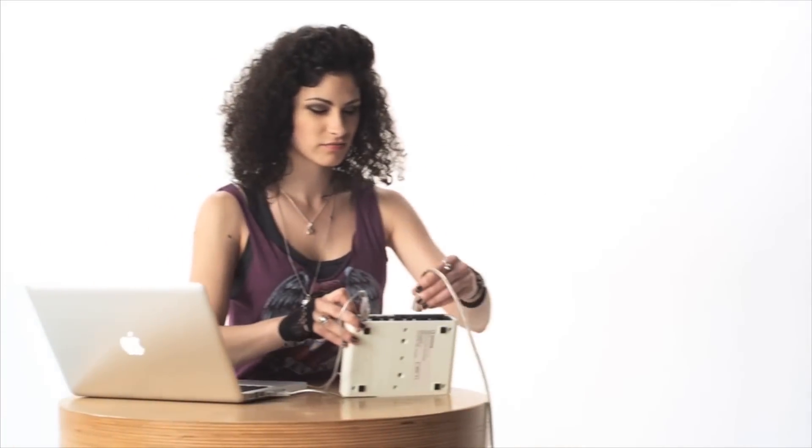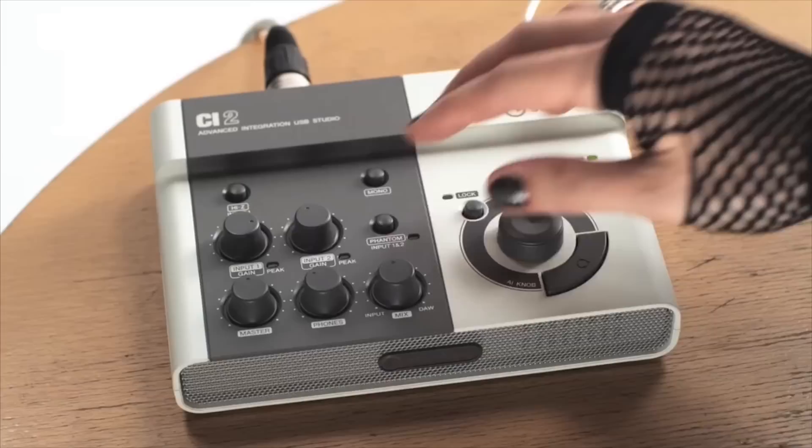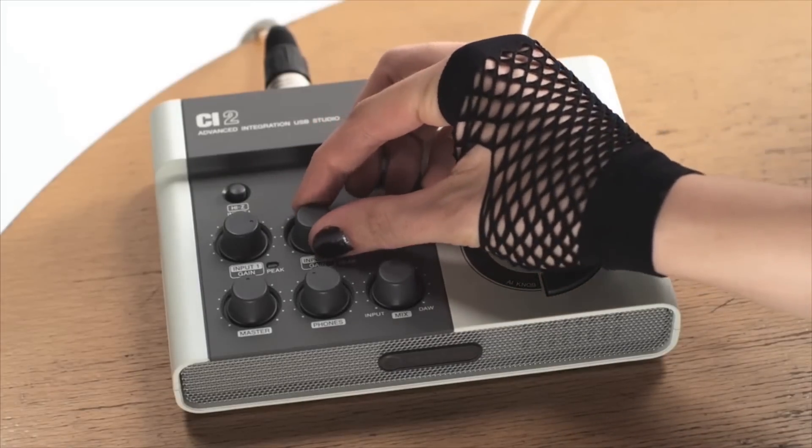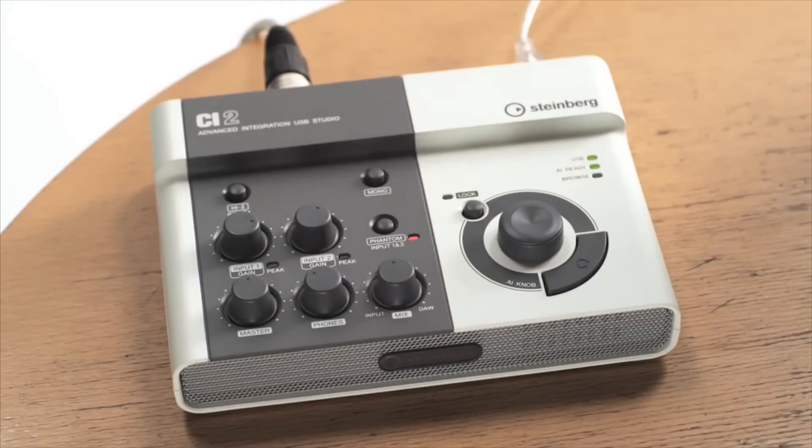If you want to record a singer or any other instrument with a microphone, plug it into the other channel. If it's a condenser studio mic, switch to Phantom Power On and adjust the input gain. Now connect headphones and monitor speakers to monitor your sound.